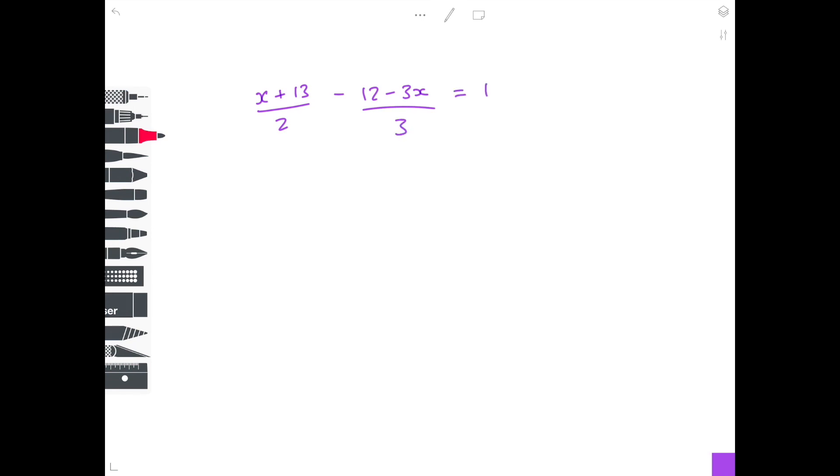In this final example, we're looking at a subtraction example. So what is our lowest common multiple of both 2 and 3? That is 6. So multiply everything by 6. Don't forget to multiply 1 by 6. Let's do some canceling down.